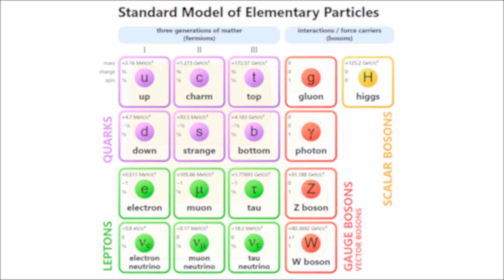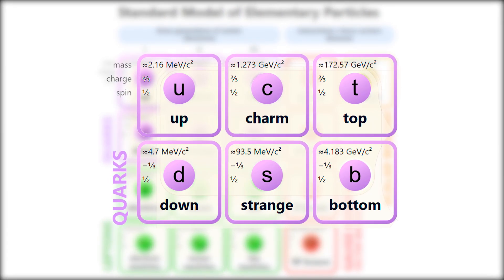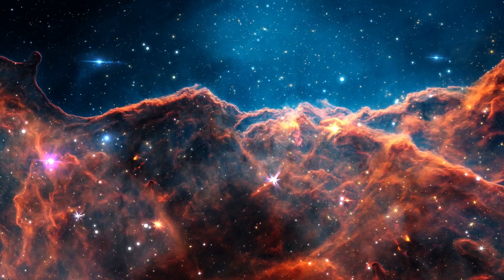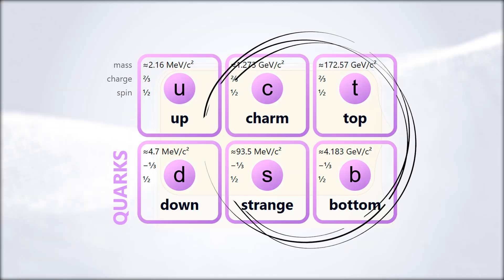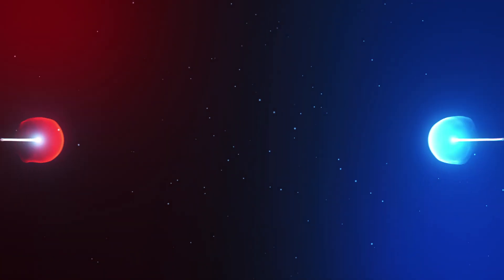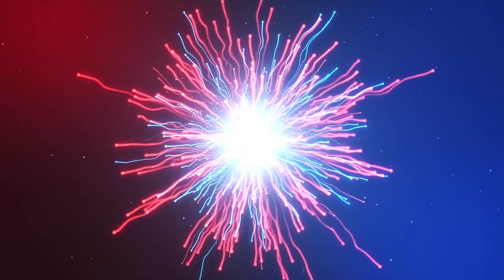Quarks come in six flavors—up, down, charm, strange, bottom, and top. Most of the matter you see in the universe is made of up and down quarks. But the others—charm, strange, bottom, and top—only show up in extreme conditions, like those created in high-energy particle accelerators.